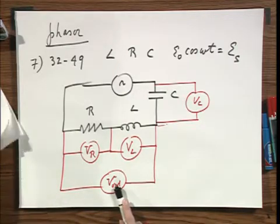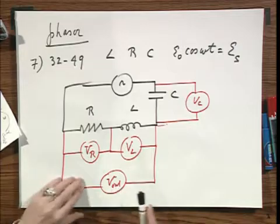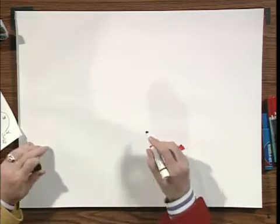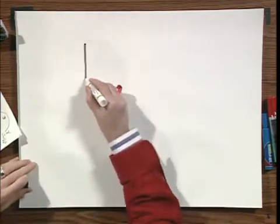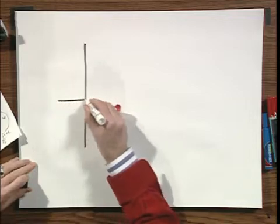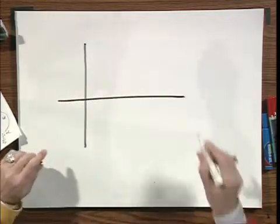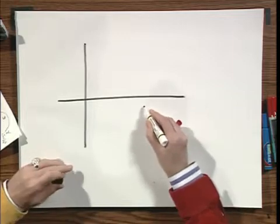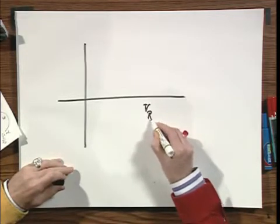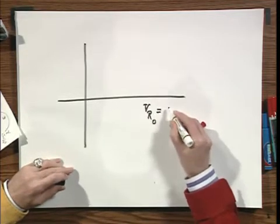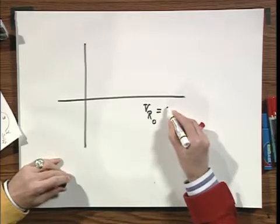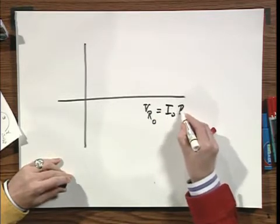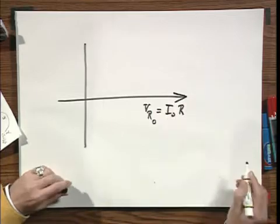Well, this is now where a phasor diagram can be very useful. We treat the voltages in a way as vectors. If the current at one particular moment is I zero, which is the maximum value, the amplitude of the voltmeter over the resistance will be I zero times R. And I put that here as a vector.